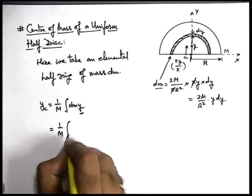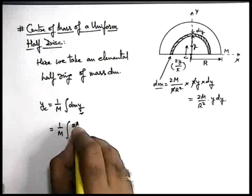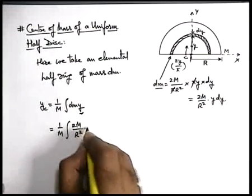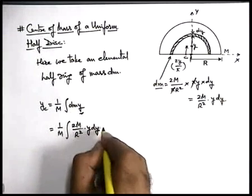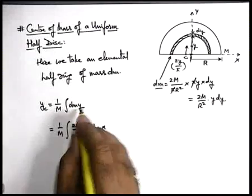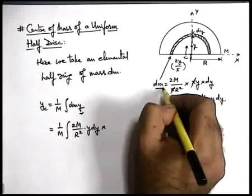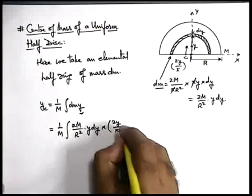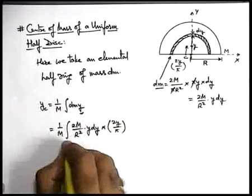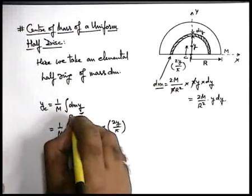So this will be (1/m) integration of dm, which can be written as (2m/r²) × y dy, multiplied by this y-coordinate of center of mass of dm, which can be written as 2y/π. And this has to be integrated from zero to r.